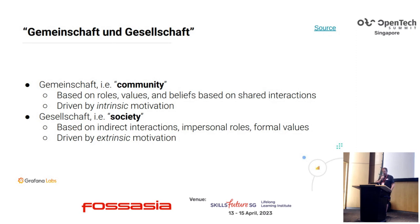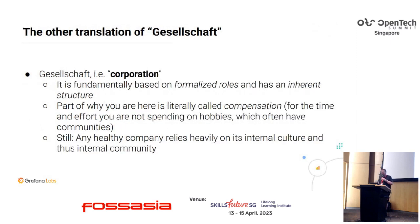Contrary to a society, where a lot of interactions are not very direct — you send a letter, something is very indirect. You have a lot of impersonal roles and formalized values, and a lot is driven by extrinsic motivation. For example, you don't want to be fined — that's a good example while we're here in Singapore — or you don't want other people to look down on you. And then there's Gesellschaft, or corporation, where people come together based on formalized roles and inherent structure. Part of why you are at a company is literally called compensation — you are being paid for your time, which is very much an extrinsic motivation.